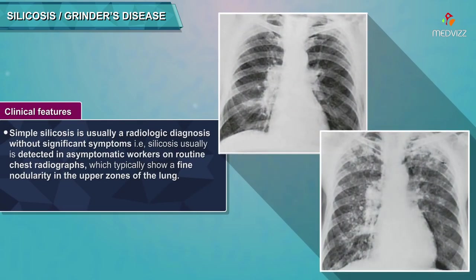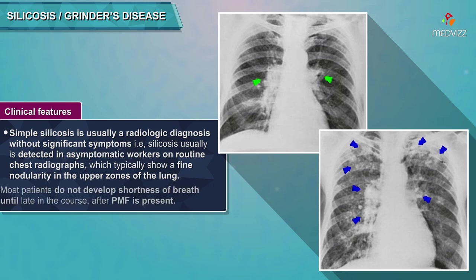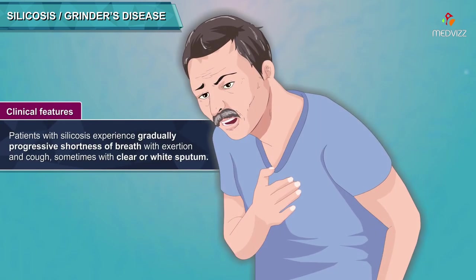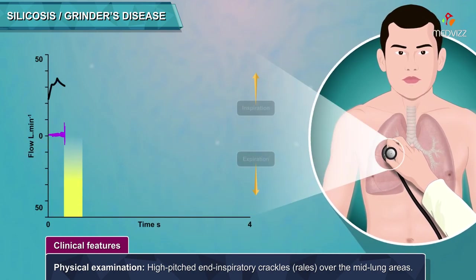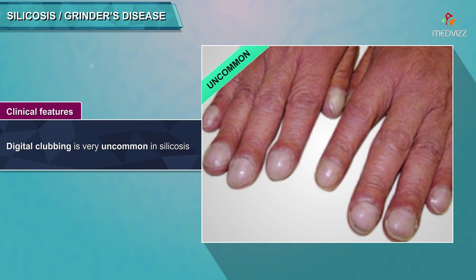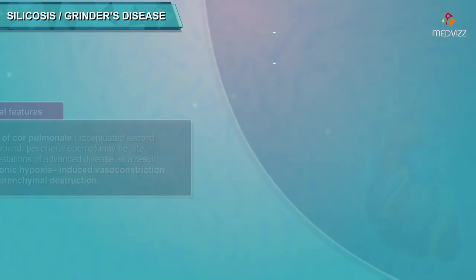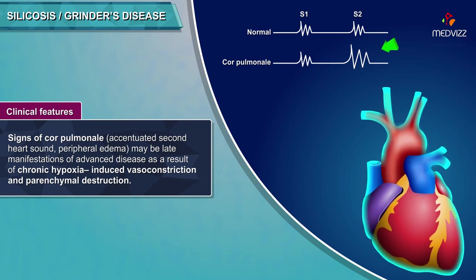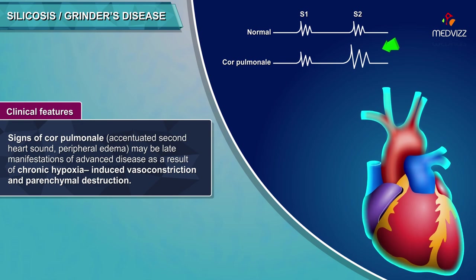Clinical features: Simple silicosis is usually a radiologic diagnosis without significant symptoms, detected in asymptomatic workers on routine chest radiographs showing fine nodularity in the upper zones. Most patients do not develop shortness of breath until late in the course after PMF is present. Patients experience gradually progressive shortness of breath with exertion and cough, sometimes with clear or white sputum. Physical examination may be normal, or high-pitched end-inspiratory crackles over the mid-lung areas. Digital clubbing is very uncommon. The disease is slowly progressive, often severely limiting physical activity.